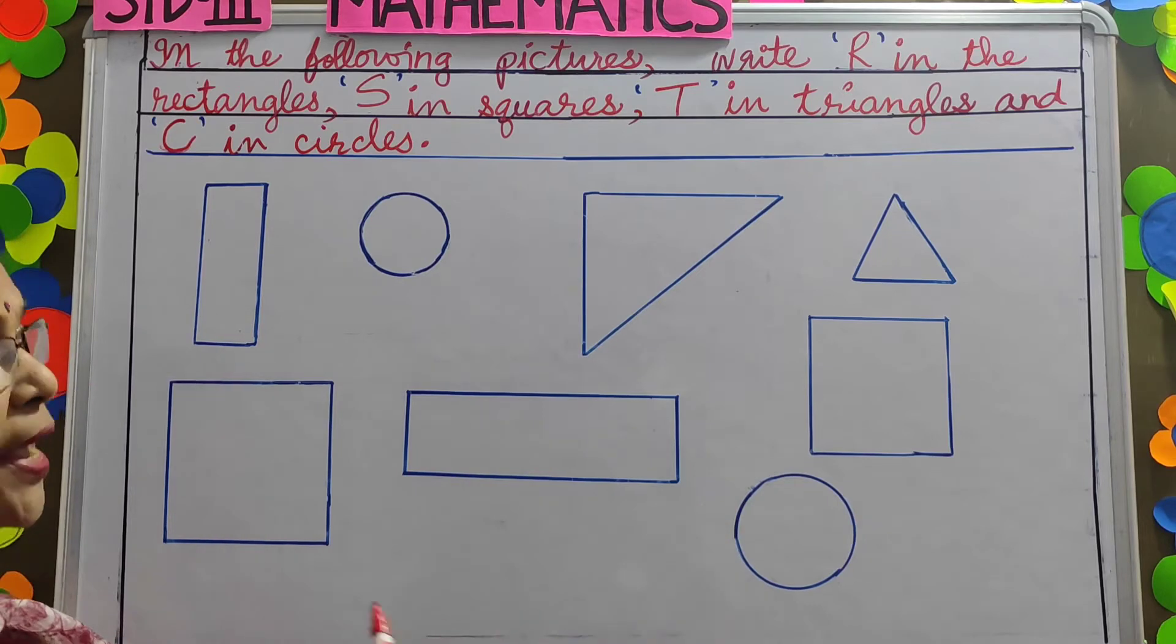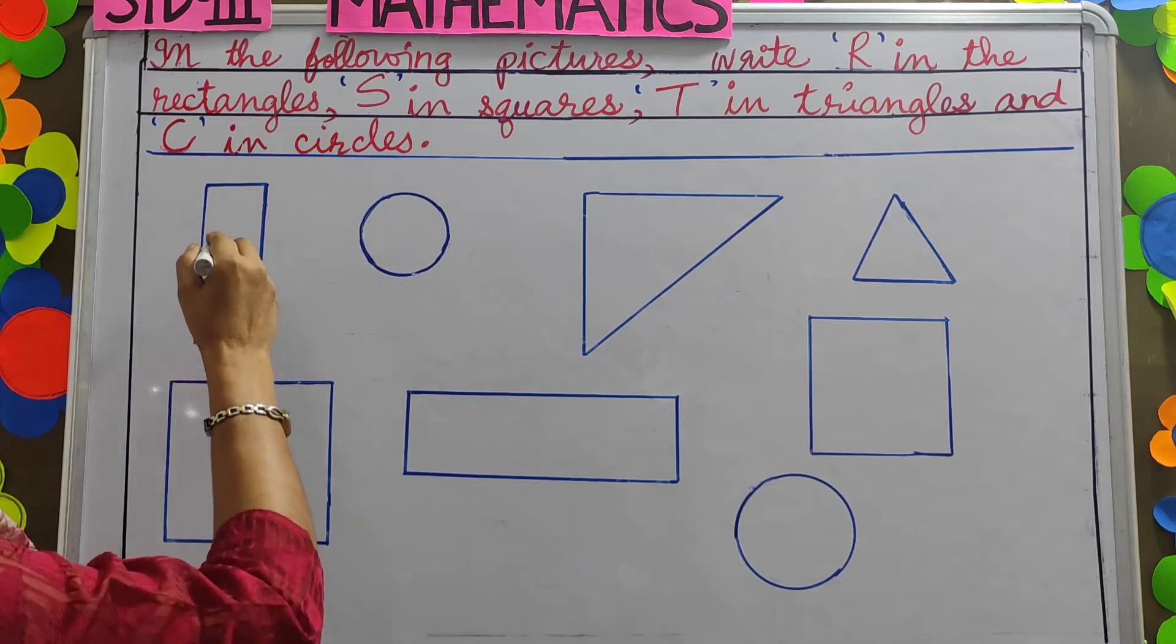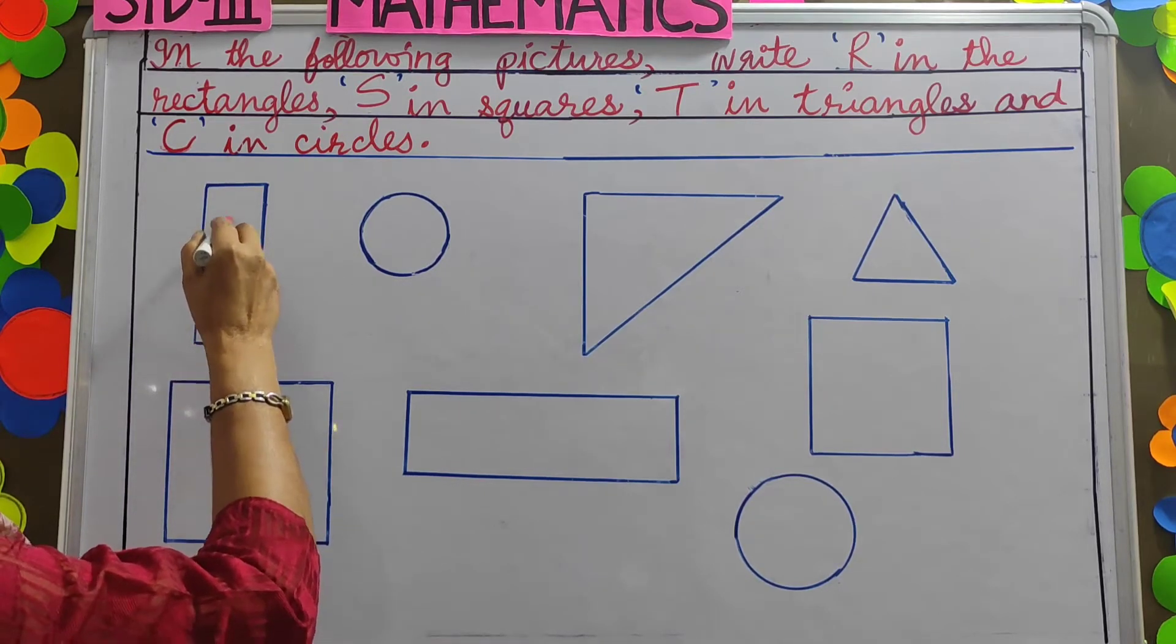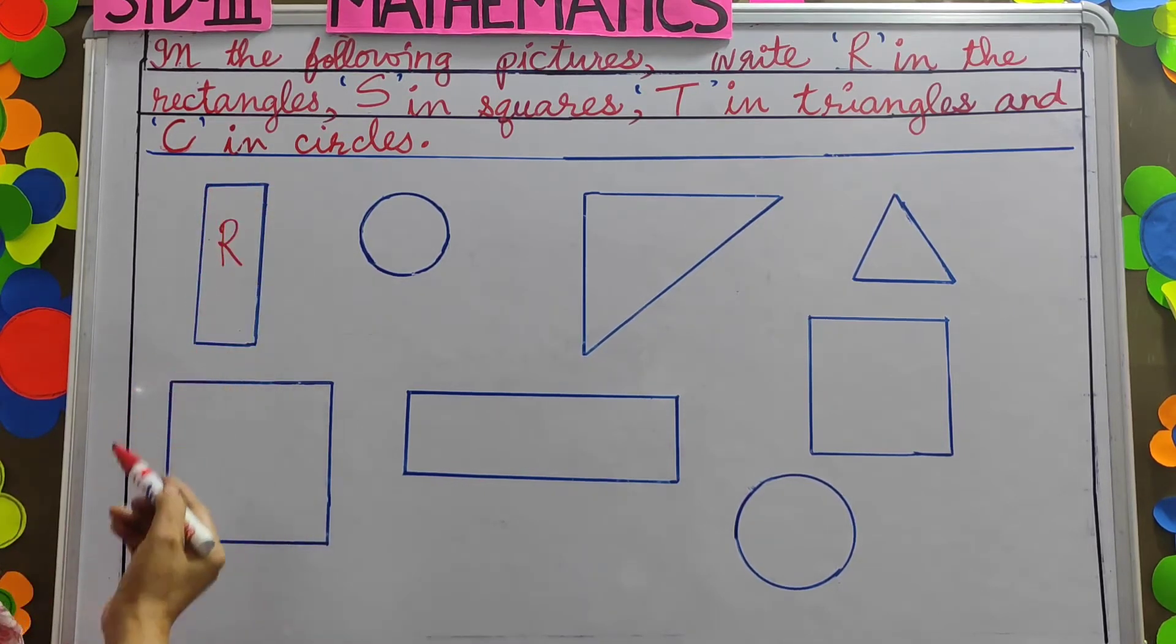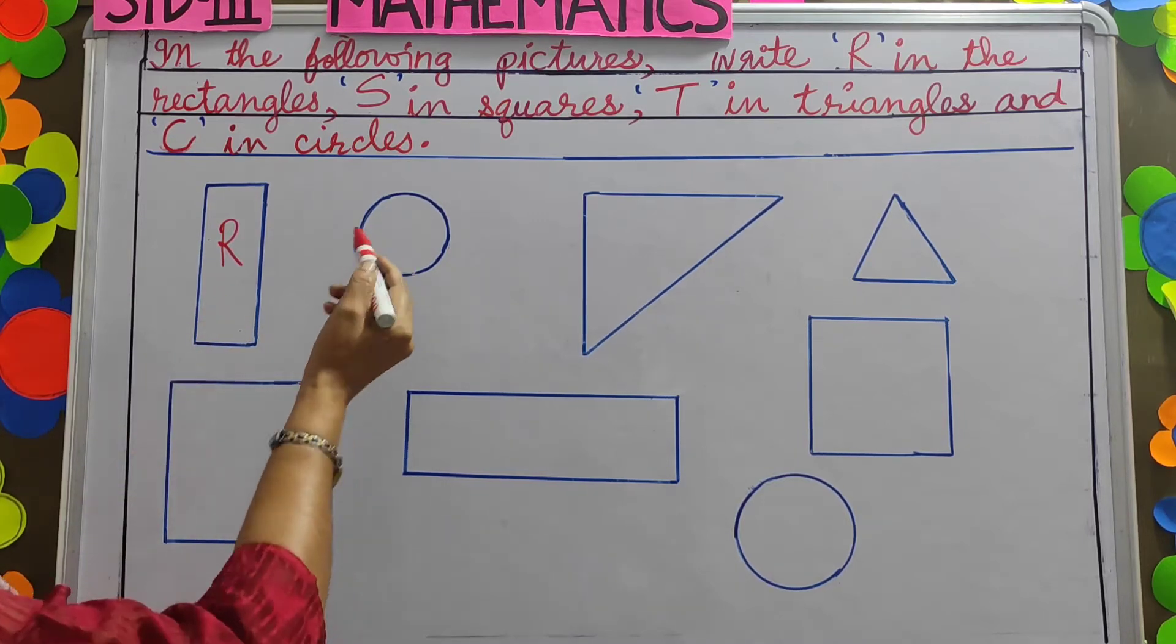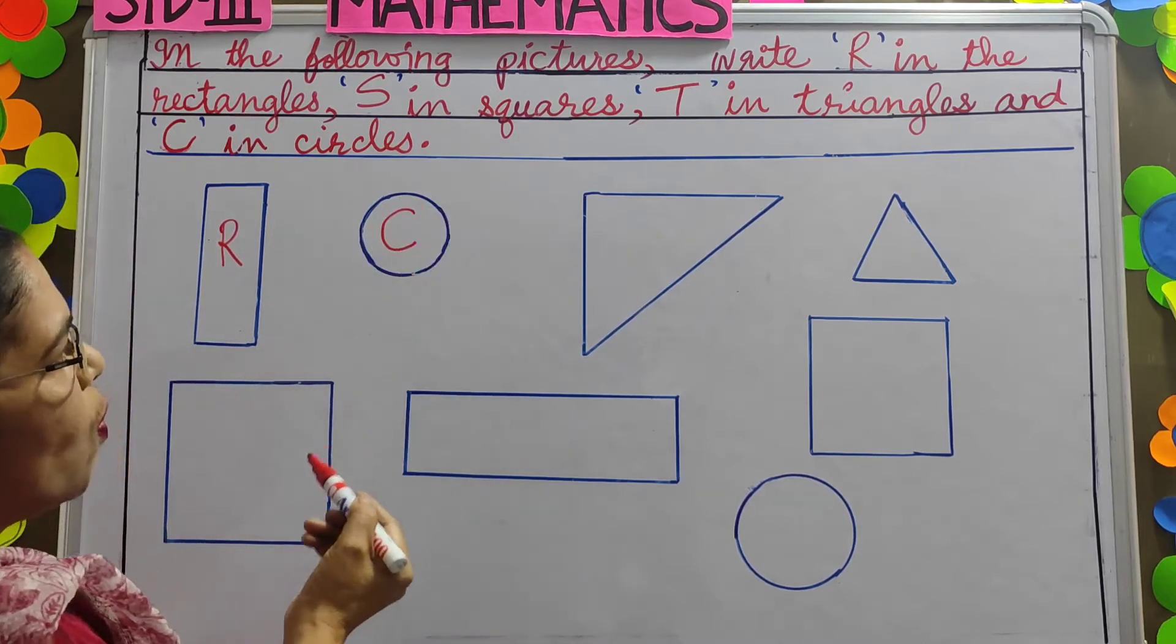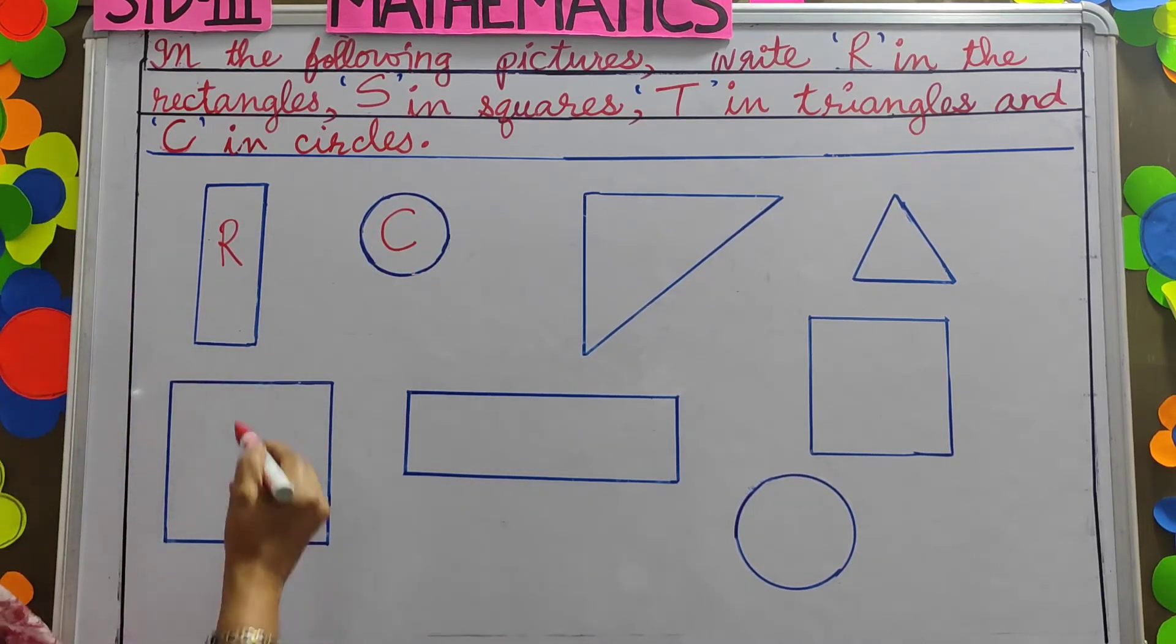These are plane figures. So what is this children? It is a rectangle. So we will write R. Opposite sides are equal and it has four sides. And this children is a circle. It has one curved face.